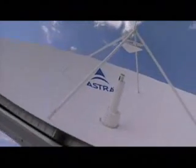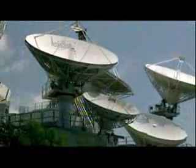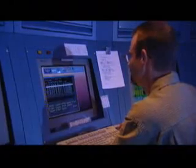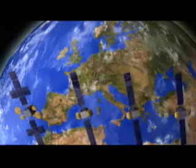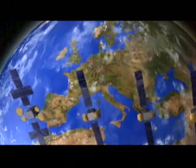On the ground, at control centres located around the world, huge parabolic antennae track each spacecraft. The control centres receive a constant flow of information from each satellite, telling them their precise locations at all times, and the exact status of the on-board systems, which are exposed to the harsh environment of space.